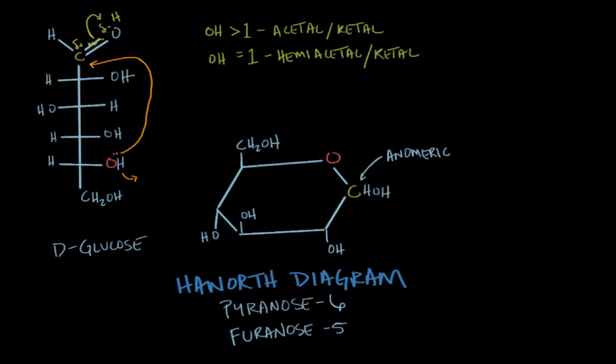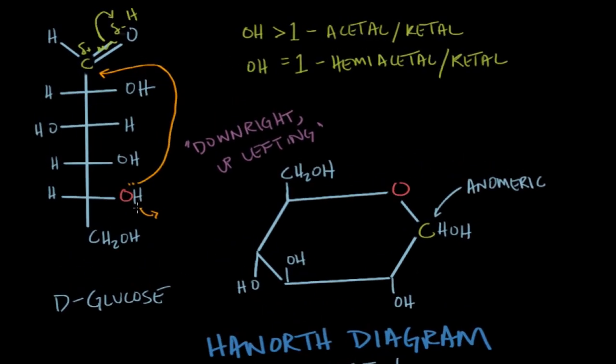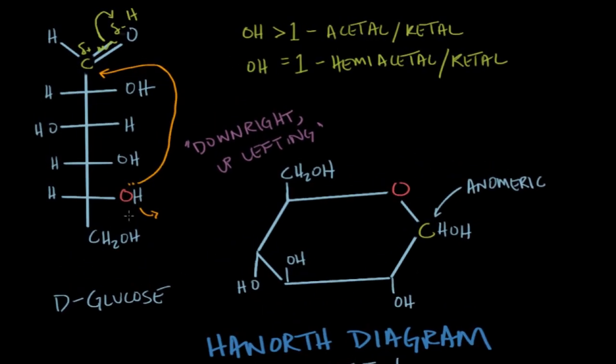But it is beneficial in telling us which substituents are above or below the ring. So to keep this convention straight in my mind, I remember the phrase downright uplifting. So downright uplifting. Kind of a play on the phrase that's downright uplifting. But downright uplifting. Because as I fill in the substituents, those on the right side of the Fischer diagram will point down. And those on the left side of the Fischer diagram are going to point up. So we can actually see that. That one's up. And we'll make sure that this number is on the right. This one's up as well.